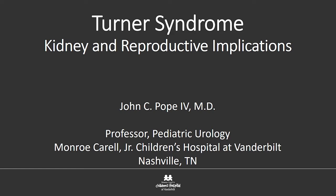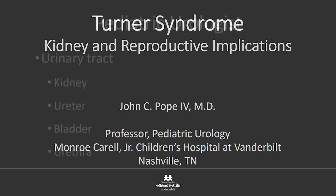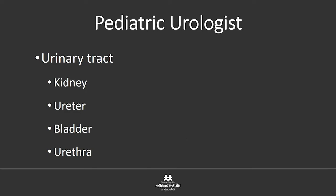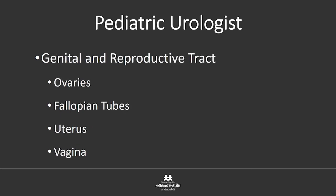The first thing I'd like to go over is that some of you may not even know what a pediatric urologist is. Pediatric — obviously, I take care of children. But as a urologist, I take care of the genitourinary tract, which includes the urinary tract from the kidney all the way to the urethra. I take care of structural anomalies — kidney, ureter, bladder, urethra — basically the plumbing system of the body. In addition, I do surgery on the genital and reproductive tract, including in females: ovaries, fallopian tubes, uterus, and vagina.